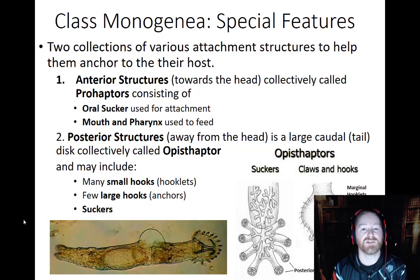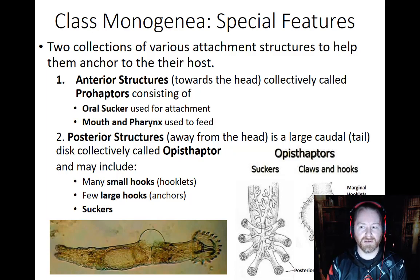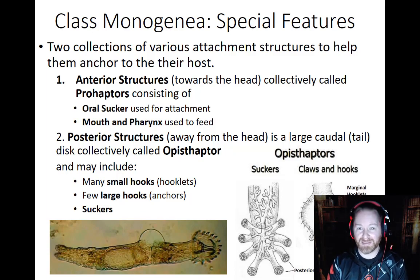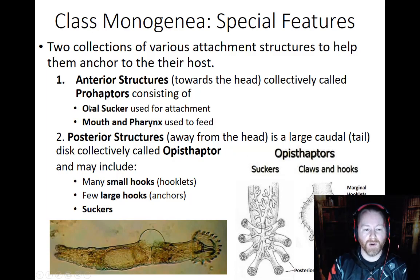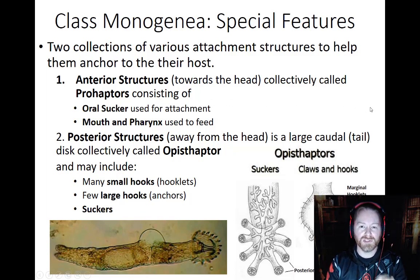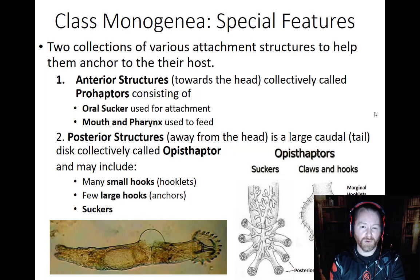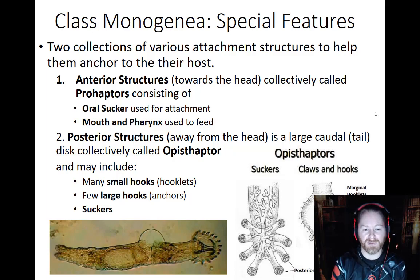So what are the special features that monogeneans have? Most of these features are designs for helping them stay attached to their host, since most are living on the outside of something like a fish. On the anterior side they have a structure called a prohaptor, which is basically a region that has an oral sucker — just a suction cup at the head — and it's also where their mouth and pharynx is located, allowing them to feed from different areas on the fish.